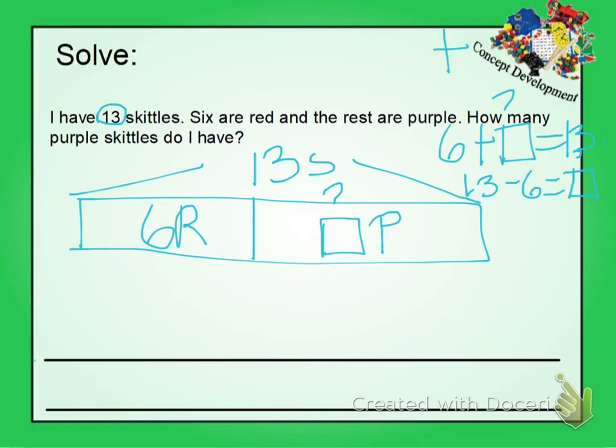So looking at this, you can count on, or you can count down to figure it out. So I'm going to show you both ways. Six, seven, eight, nine, ten, eleven, twelve, thirteen. Oh, we'll have seven fingers up. Or, thirteen, twelve, eleven, ten, nine, eight, seven, six. Same thing, I have seven fingers up. So it's seven.